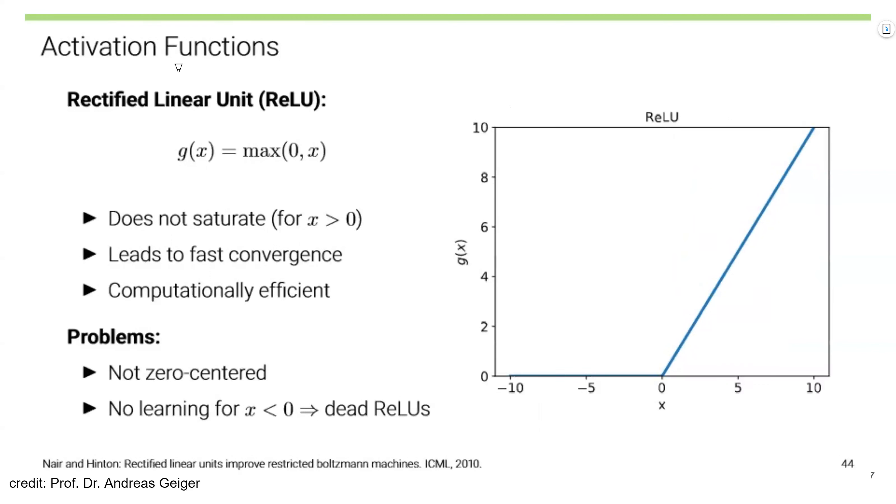Another activation function is rectified linear unit, abbreviated as ReLU. It has this equation. This does not saturate for x larger than 0. As you can see here, it always has some slope. Therefore, it leads to fast convergence. And another thing is, it does not involve exponentiation or other complicated computation. So it is computationally very efficient.